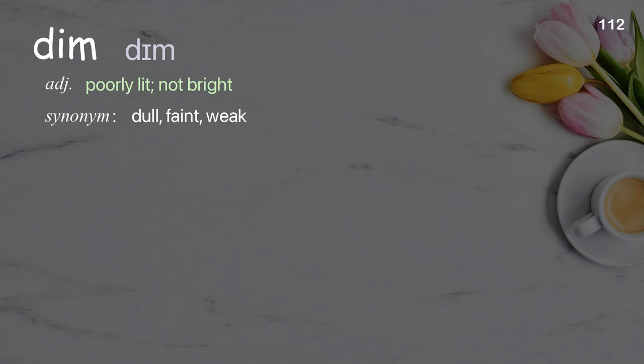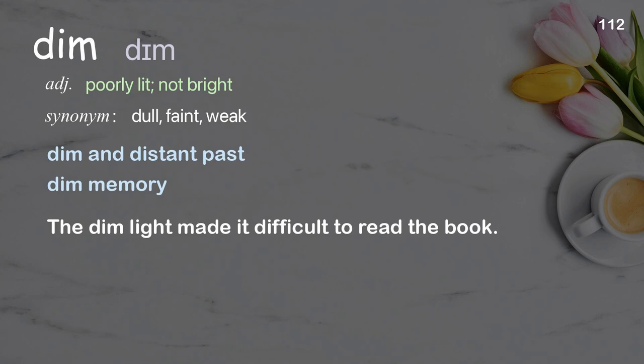Dim: poorly lit; not bright. Examples: dim and distant past, dim memory. The dim light made it difficult to read the book.